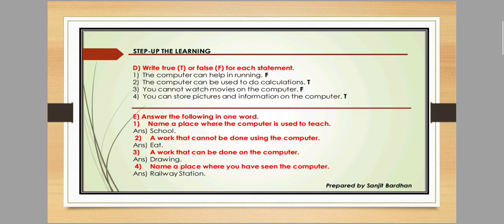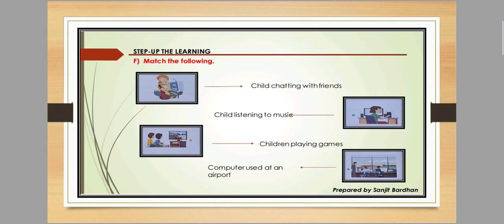Next is answer the following in one word — these can also appear as multiple choice questions. 'Name a place where the computer is used to teach' — the answer is school. 'Name a work that can be done on the computer' — drawing. 'Name a place where you have seen the computer' — railway station. For match the following: a child chatting with friends, a child listening to music, children playing games, and computer used at airports.